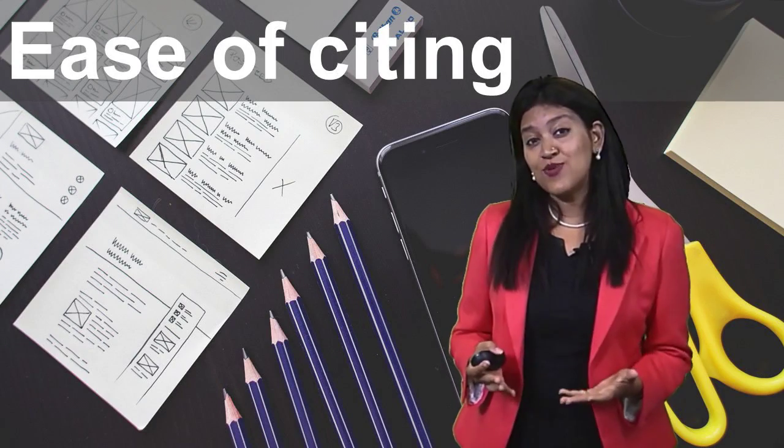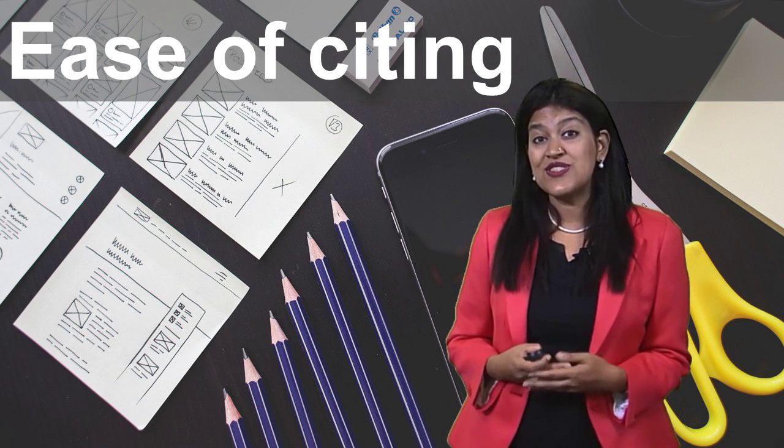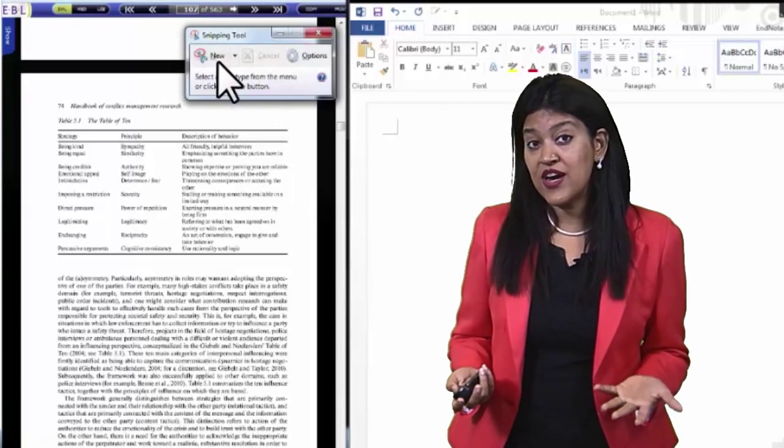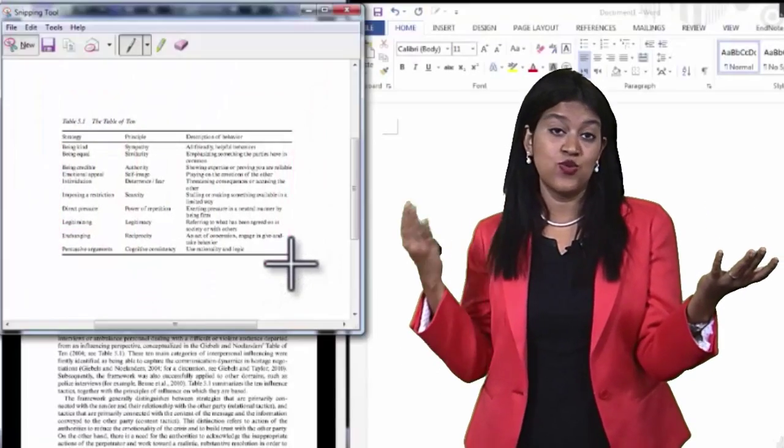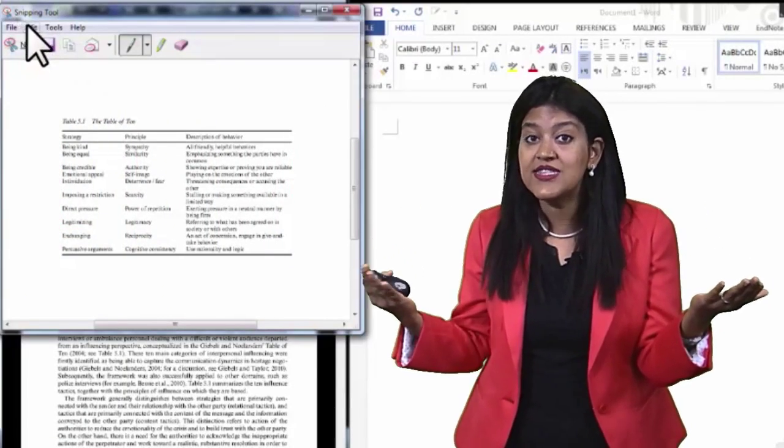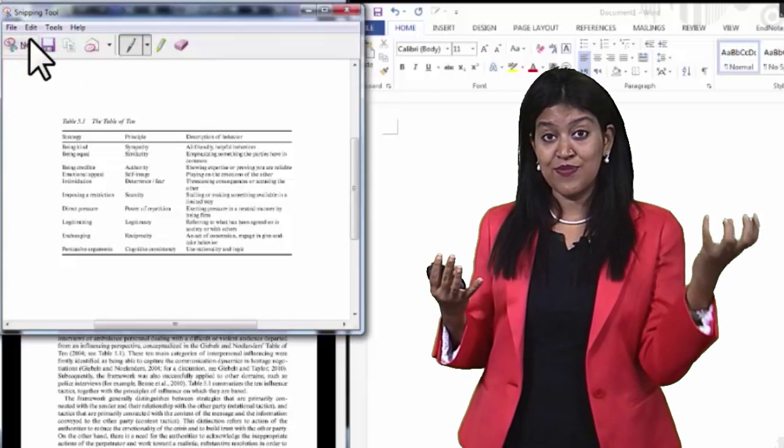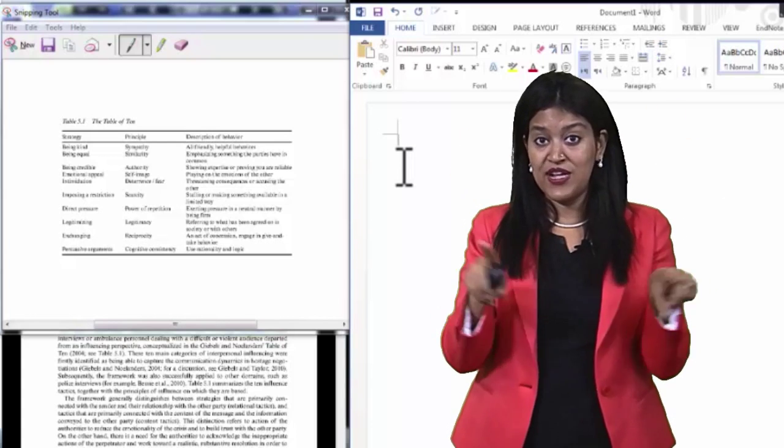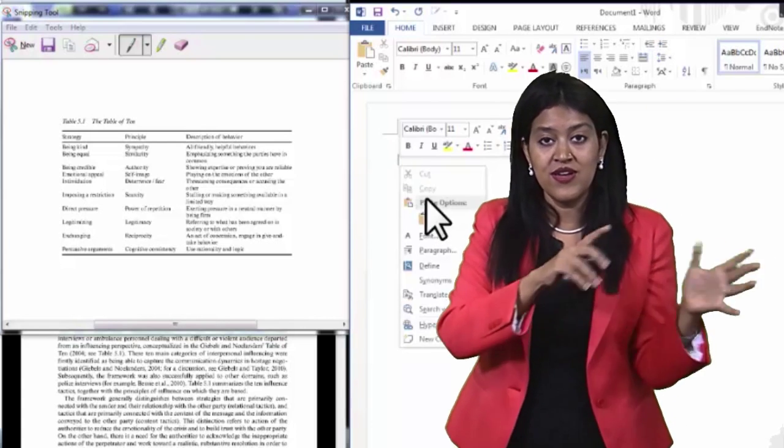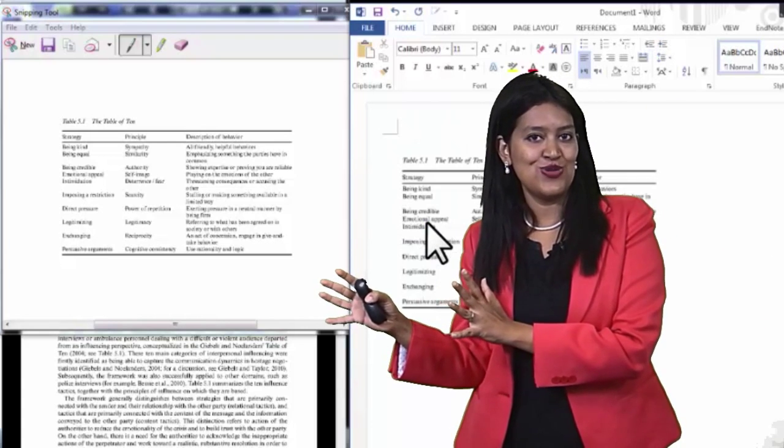The third reason why I love e-books is because it allows me to cite more accurately. Typically, when I'm reading an e-book, I split my screen where I have my e-book as well as a Word document or my PowerPoint slides, and every time I think there is something interesting that I want to capture, I use the snipping tool and just take a picture of a graph or a model, and I can easily transfer it into my Word document.